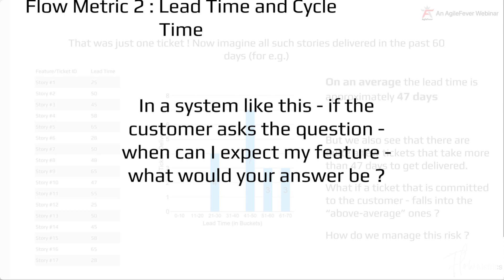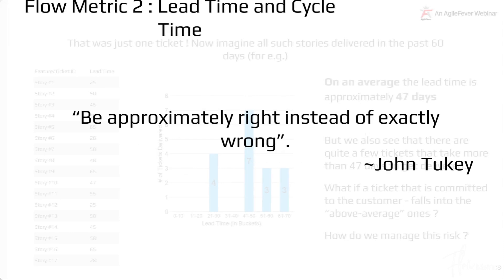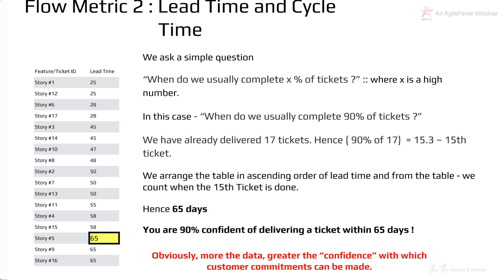When the customer asks 'when can I expect my feature?', what would your answer be? Let's be approximately right instead of exactly wrong. The average is 47 days — that is true. But we should ask: when do we usually complete a high percentage of tickets? Lead time is a post-factor metric, meaning you can only measure it after the event has completed. I typically take 90% as my benchmark — when do we usually complete 90% of tickets?